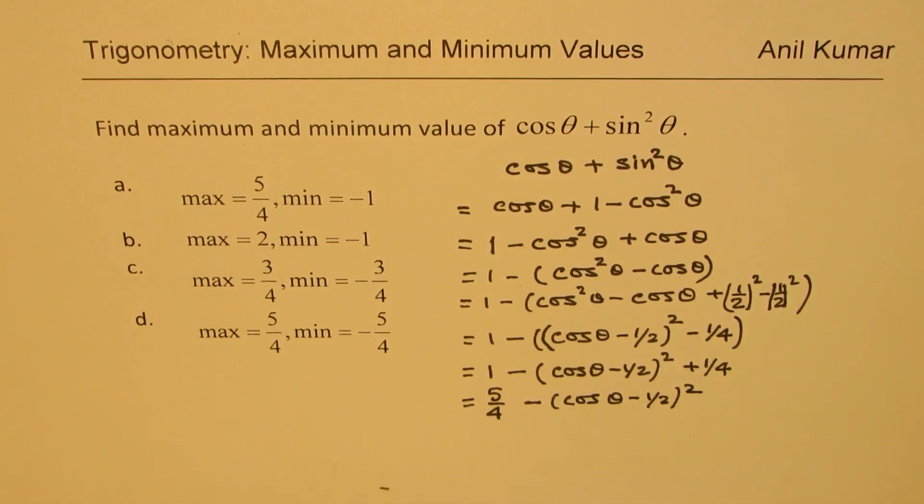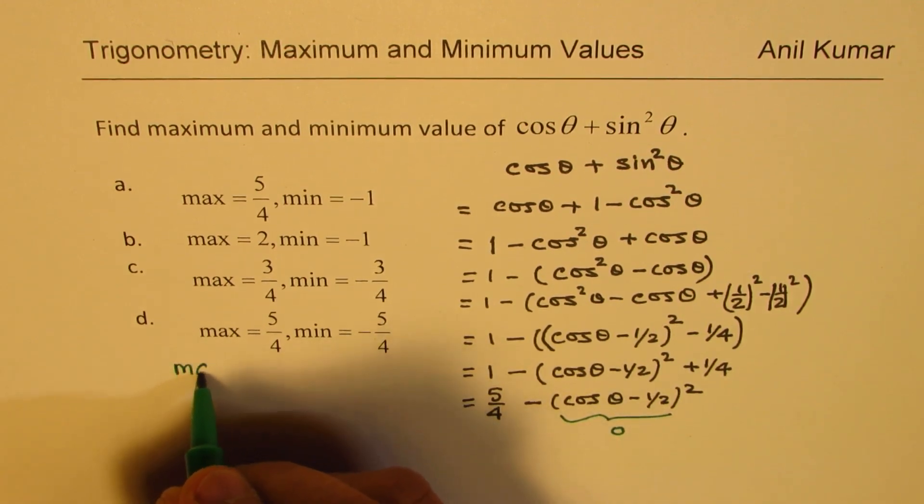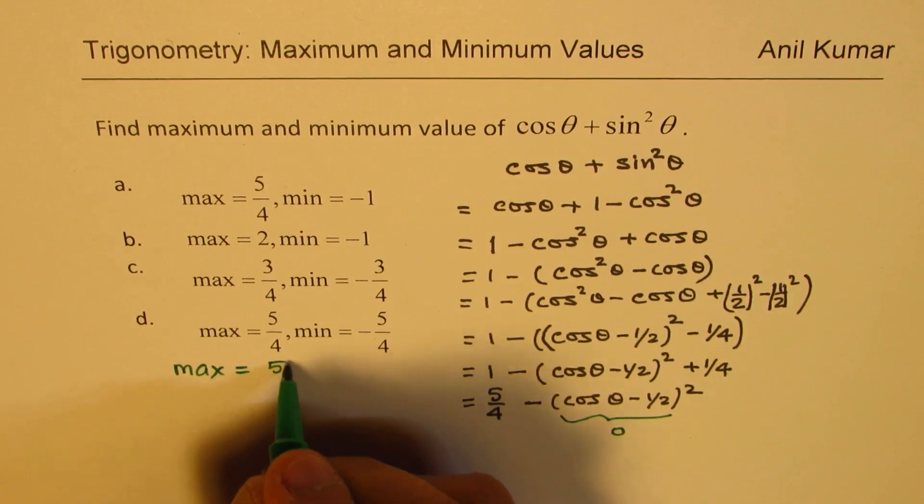Now we have an expression from where we can actually find maximum or minimum value. Well what could be the maximum value? Let's try to figure that out. If you deduct 0 from here, then we get maximum. So we have a maximum value of 5/4.